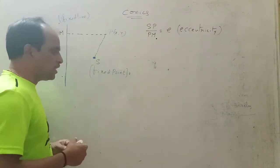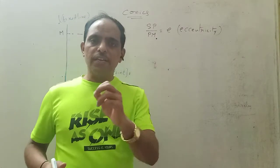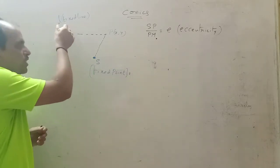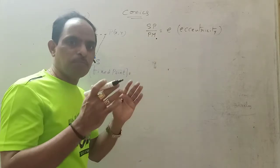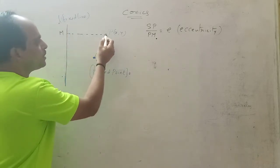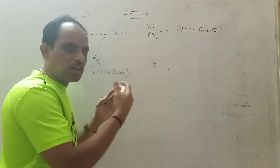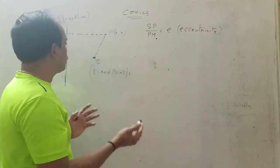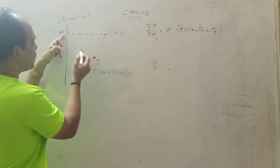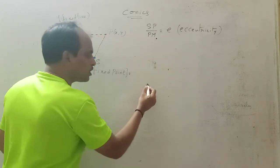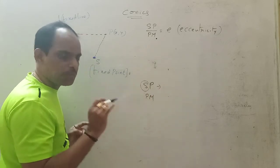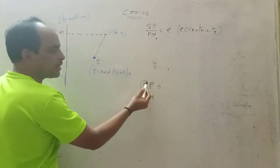The basic concept of conics depends on a fixed point and a fixed line. There is a fixed point and there is a fixed line — these are the two important pillars of the conics topic. There is also a variable point — this point moves in different ways and traces a locus. So the ratio of the distances: SP (fixed point to variable point) and PM (fixed line to variable point) — we have these two distances, SP and PM.